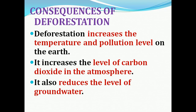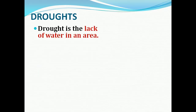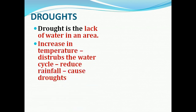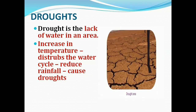Deforestation leads to drought. Drought means lack of water in an area. This is due to the increase in temperature, which disturbs the water cycle and reduces the rainfall, which causes a drought.